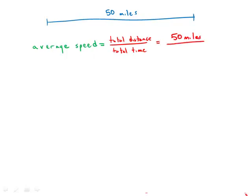So really, all we need is the total time, and if we knew the total time, we could figure out the average speed. So that's very important to understand. If we know the total time, we can find the average speed.